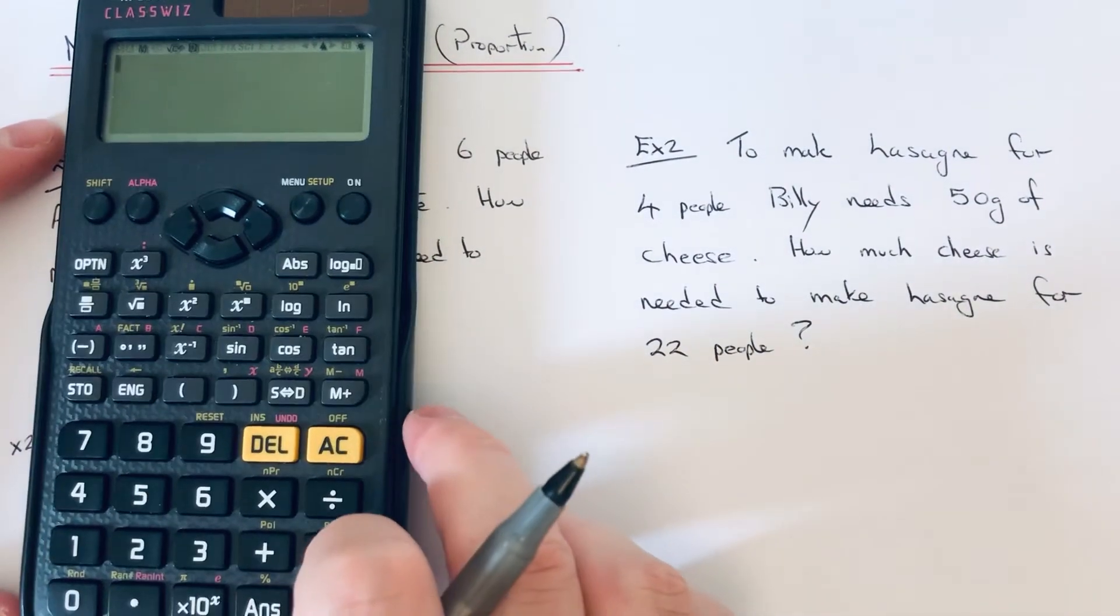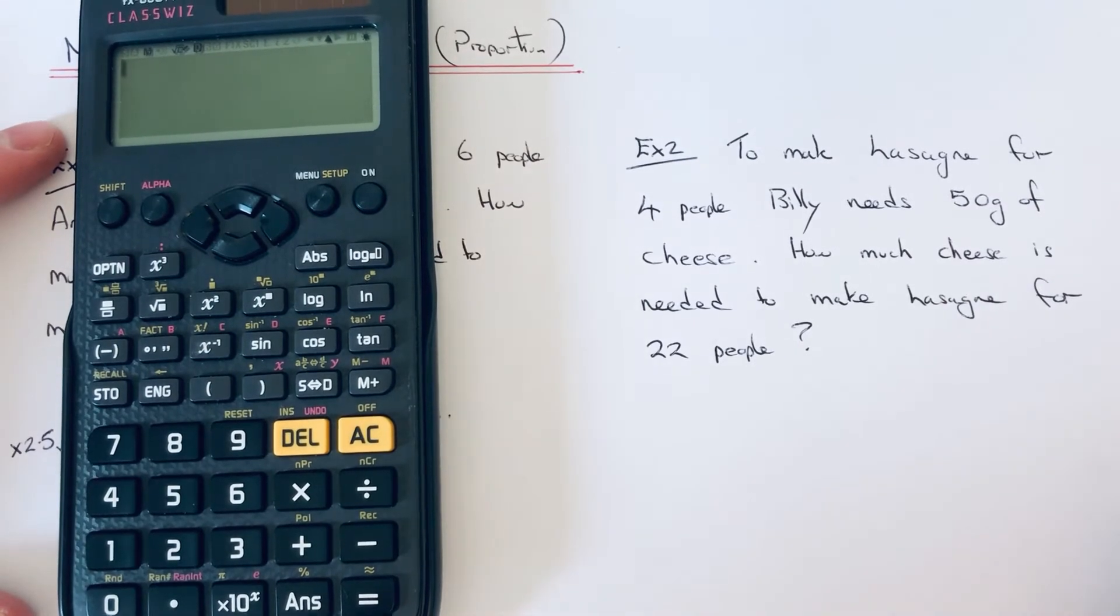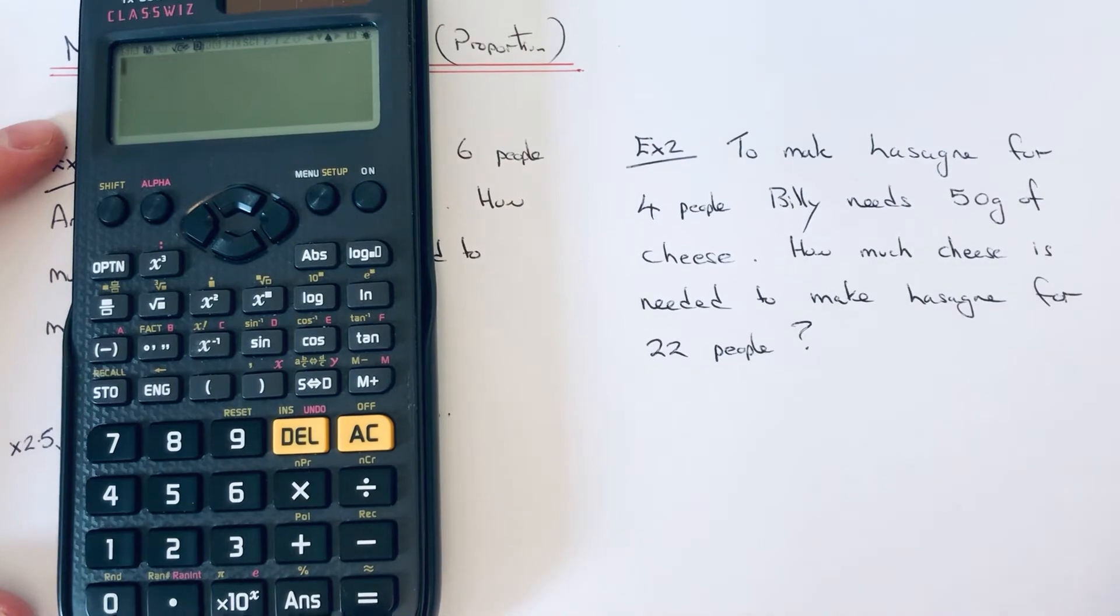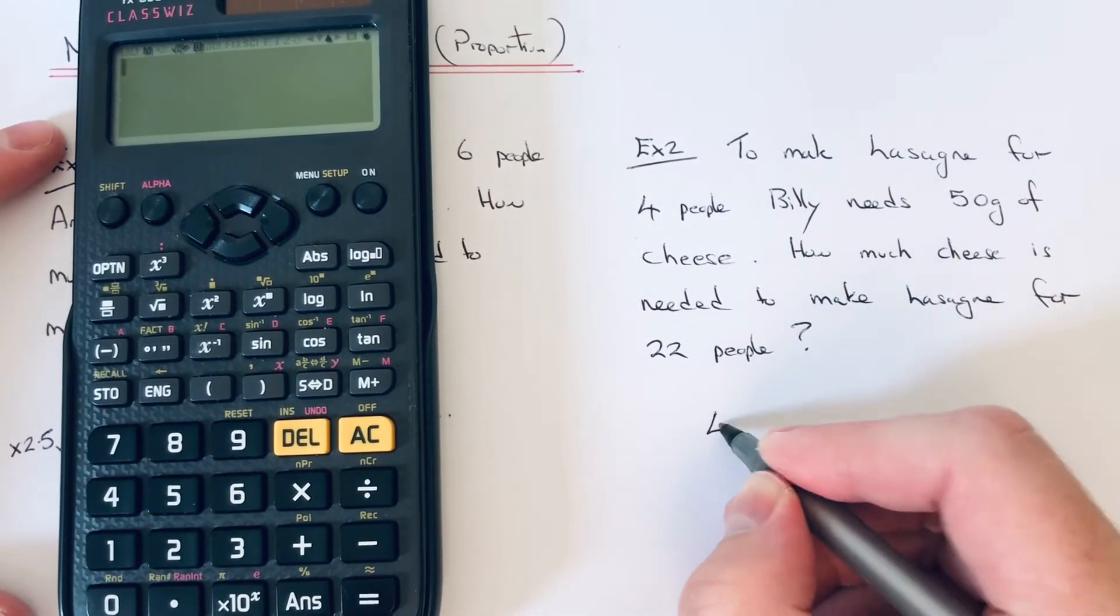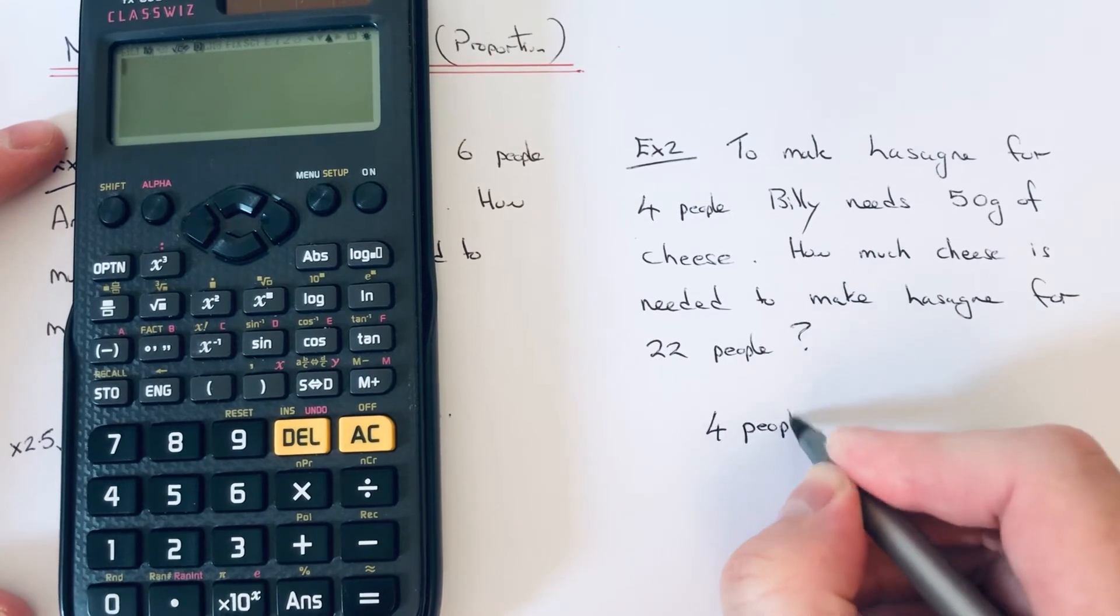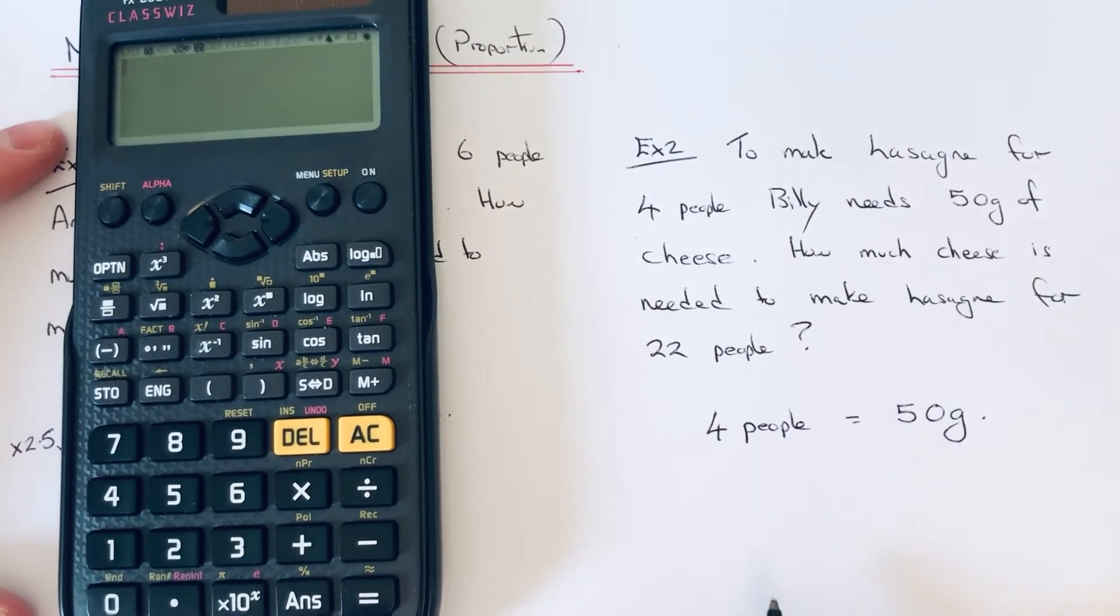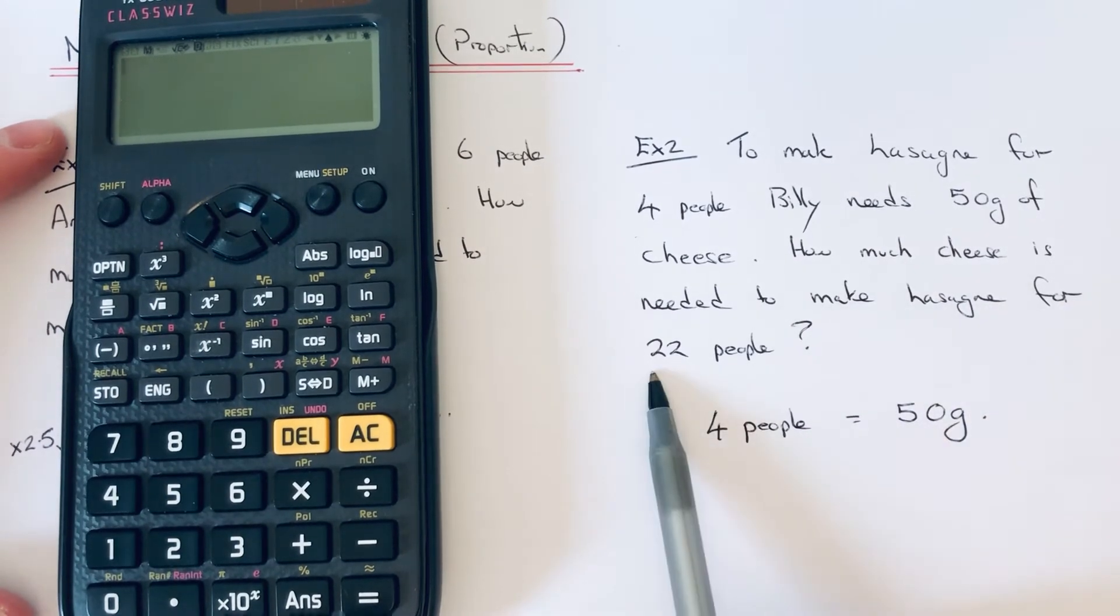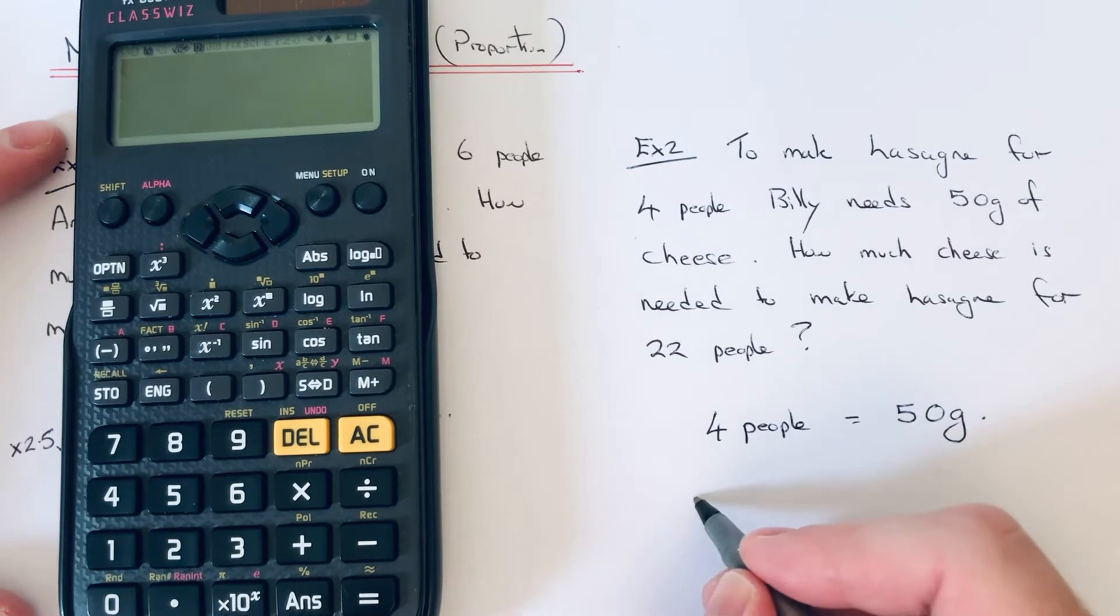So to make lasagna for 4 people, Billy needs 50 grams of cheese. How much cheese is needed to make lasagna for 22 people? So again, if we just write down 4 people equals 50 grams, and this time we need to work out how much cheese is needed for 22 people. So if we write the 22...